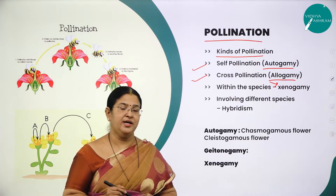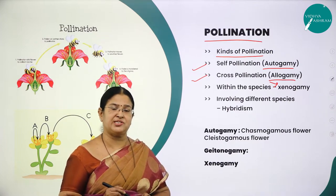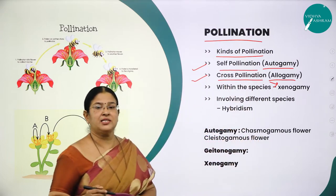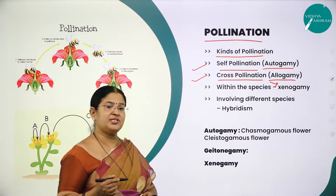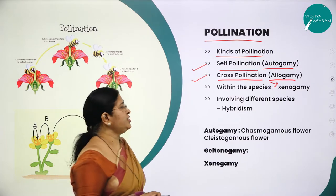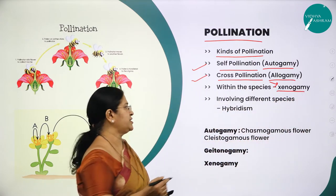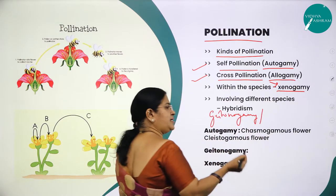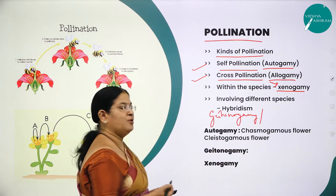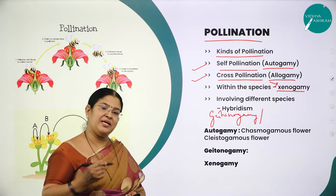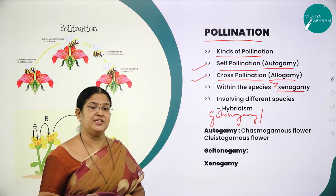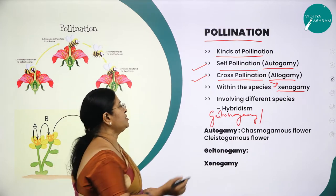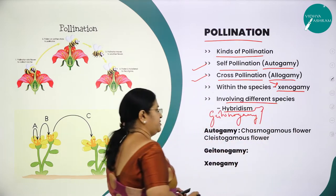A bisexual flower contains both male and female reproductive structures in the same flower. Cross-pollination is the transfer of pollen grains from the anther of a flower to the stigma of another flower of a different plant. Xenogamy specifically refers to cross-pollination between different plants. There is also geitonogamy — the transfer of pollen from the anther of one flower to the stigma of another flower but of the same plant; it is a type of cross-pollination but functionally similar to autogamy.